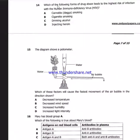Question 14: Which of the following forms of drug abuse leads to the highest risk of infection with the human immunodeficiency virus? Cannabis, cigarette smoking, drinking alcohol, and injection heroin? Of course it is injection of heroin.